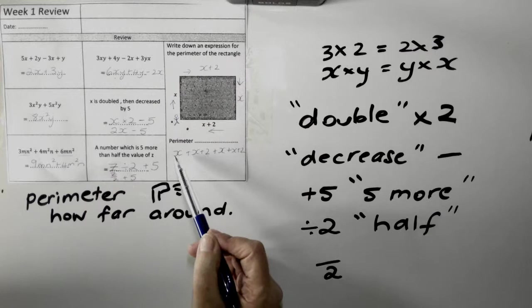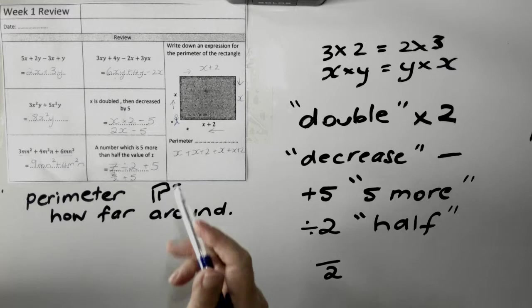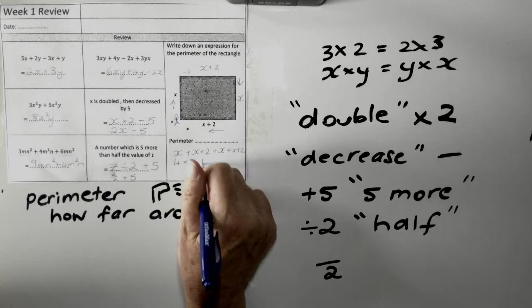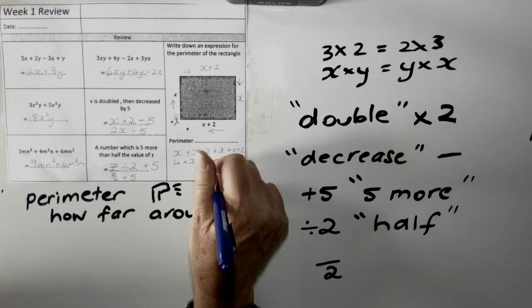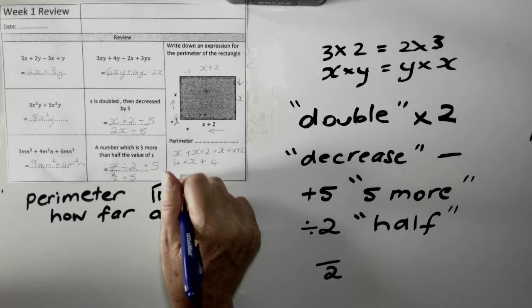To be a bit tidier, what I can do is I can look at the X's. Look, one, two, three, four. I've got four X's, which I can write four times X plus my numbers. Look, I've got a two and a two. If I put them together, I've got a four. Even tidier is if I write it like four X plus four.